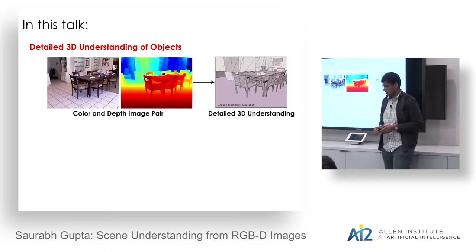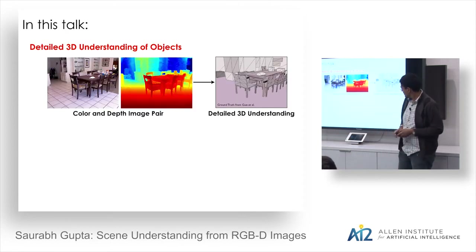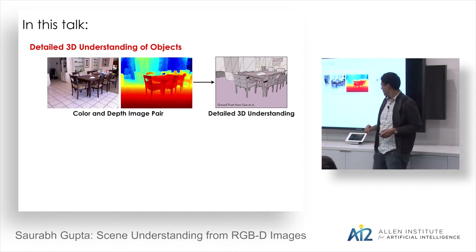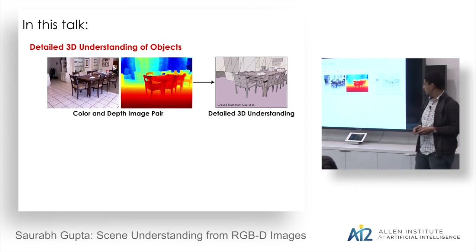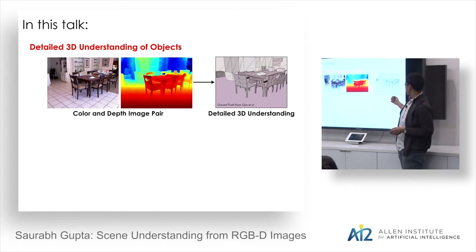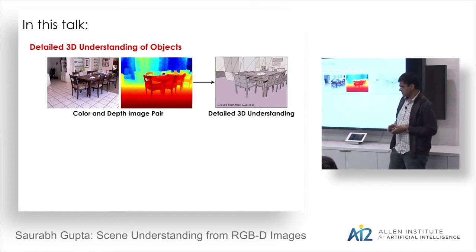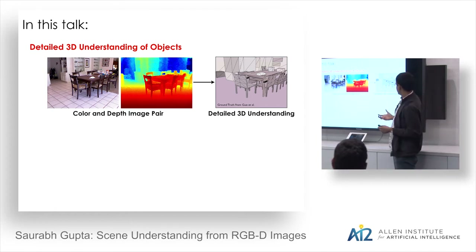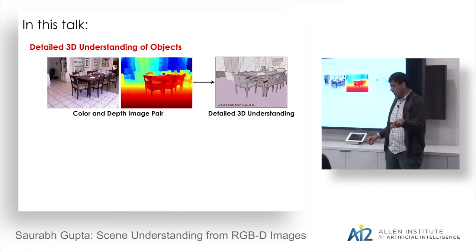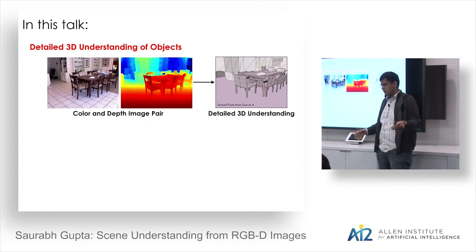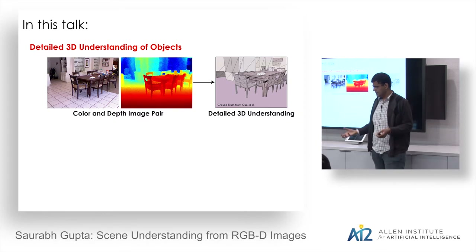The problem setting is as follows: you have as input a color and depth image coming from a depth sensor like the Microsoft Kinect, and what you want is detailed 3D understanding where we have associated CAD models to objects present in the scene. We want an understanding which a robot can use — it knows all the objects, how to grasp them, and what will happen if it moves a chair around.